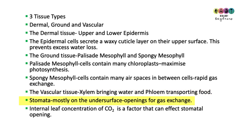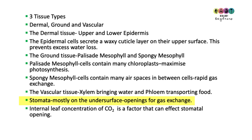The stomata are mostly on the under surface of the leaf and are openings for gas exchange. Guard cells function to open and close the stomata, and the internal concentration of carbon dioxide is a key factor that affects stomatal opening.